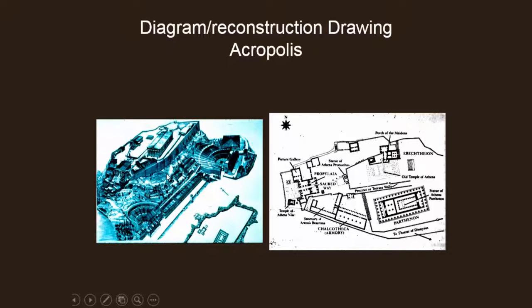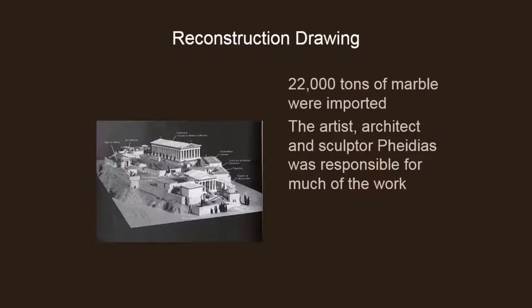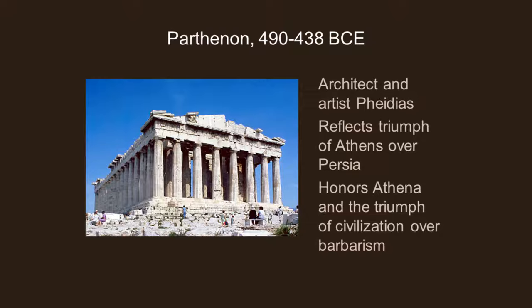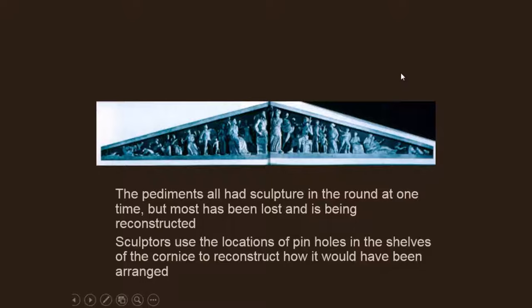The Greeks continued this idea of separating buildings — one for each purpose — so it's a group of separate buildings that creates one harmonious whole. The Parthenon is a reflection of the triumph of Athens over Persia and honors Athena and the triumph of civilization over barbarism. All of the pediments had sculpture in the round at one time, but most of it has been lost. Sculptors use the locations of pinholes in the shelves to try to reconstruct how it would have been arranged.